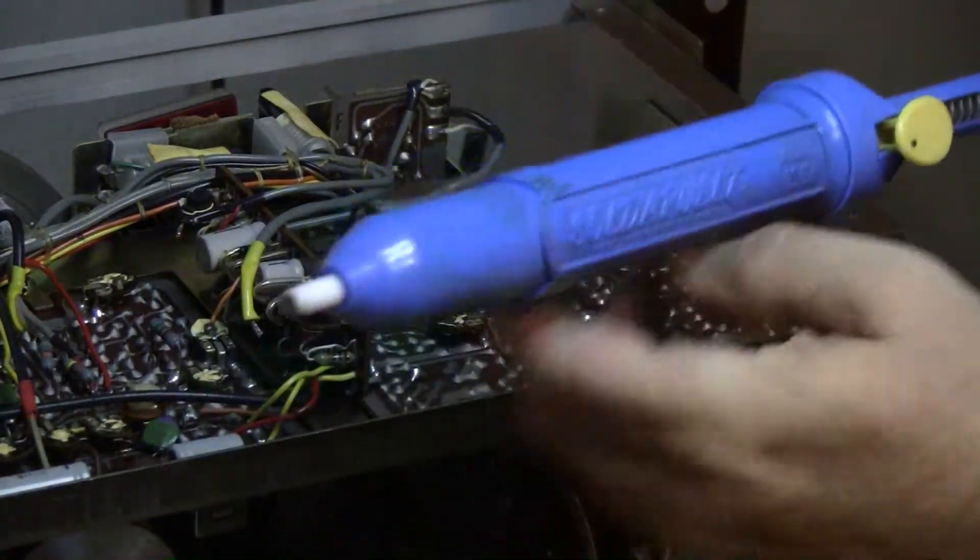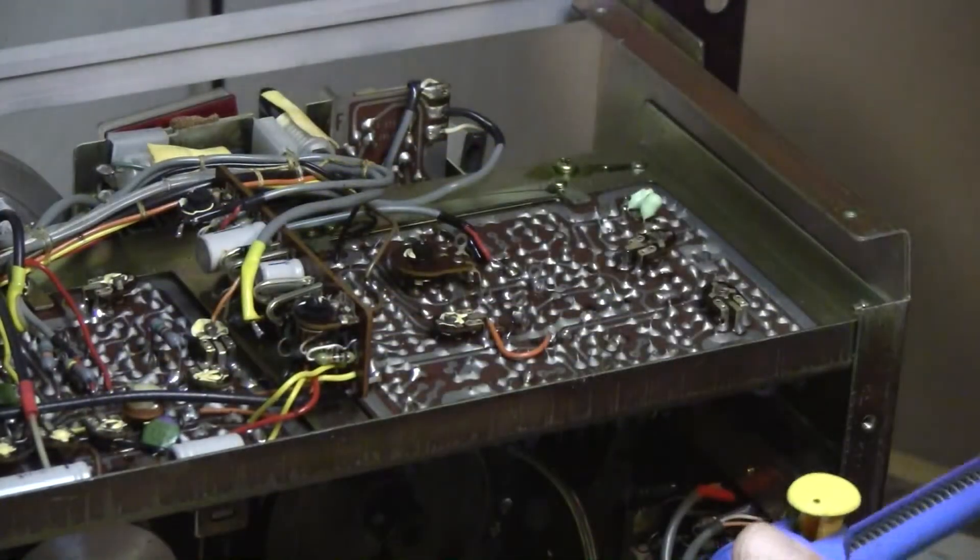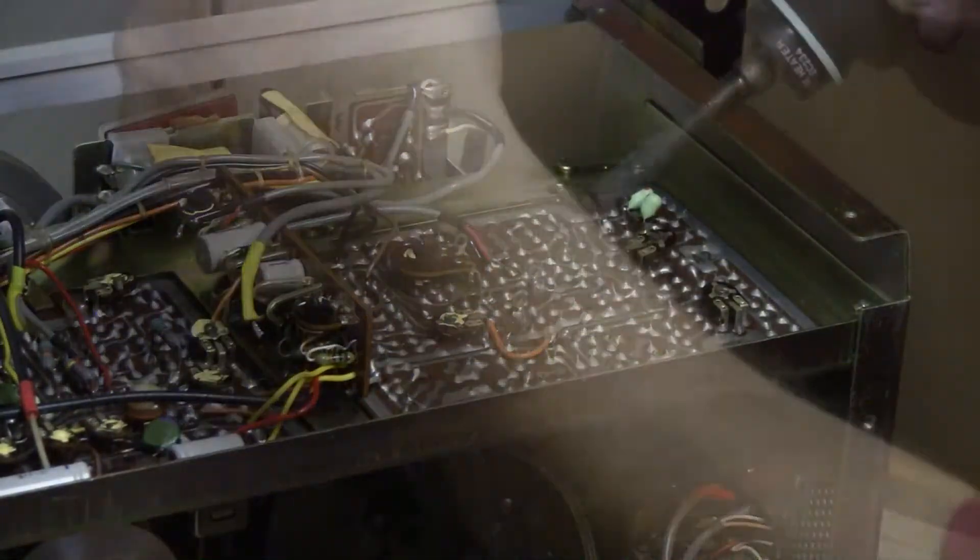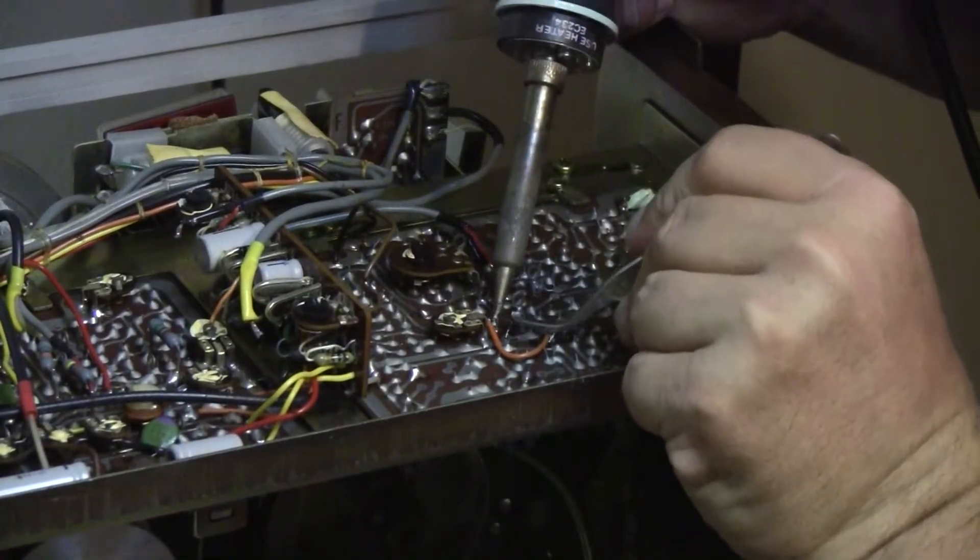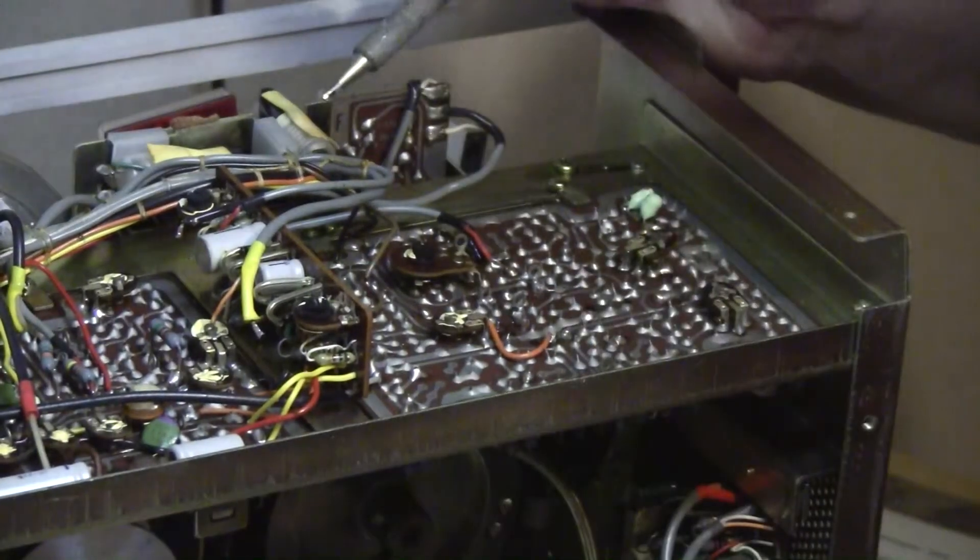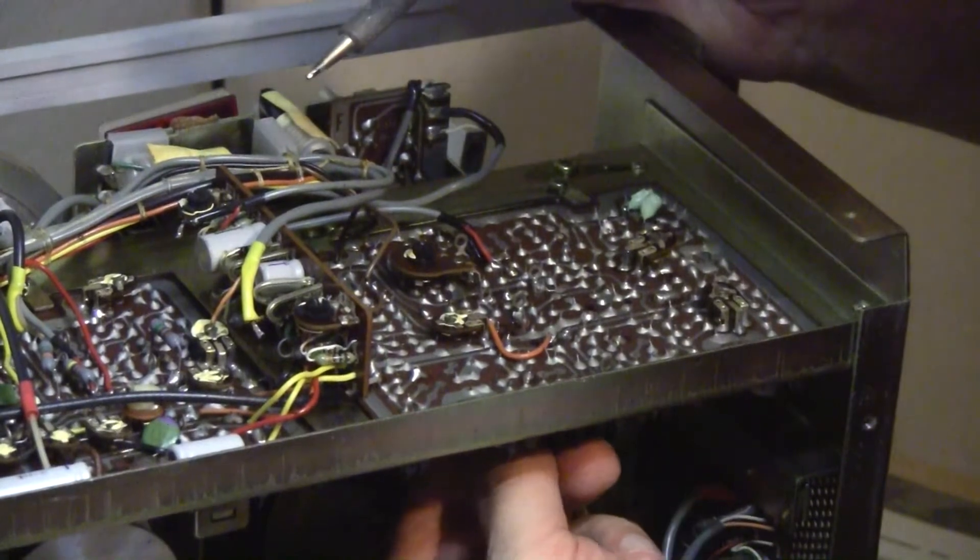This handy tool is called a solder sucker, or a solder pullet. All right, my tweezers. I don't want to block your view. Okay, that capacitor is loose.